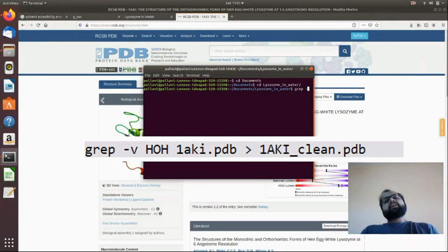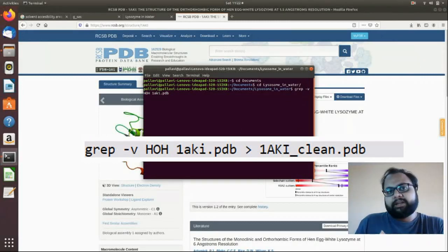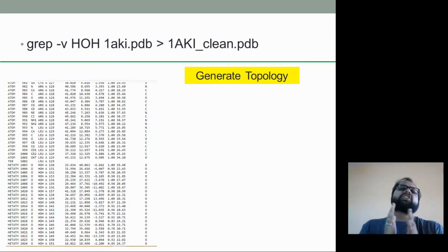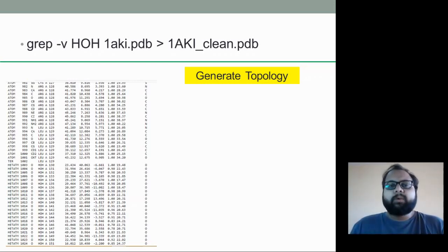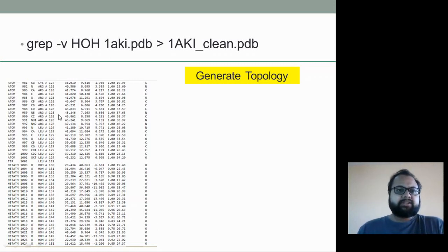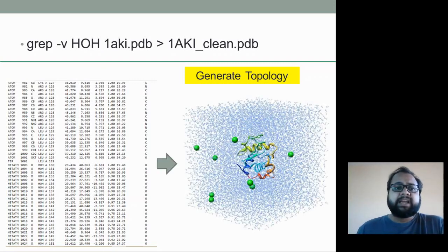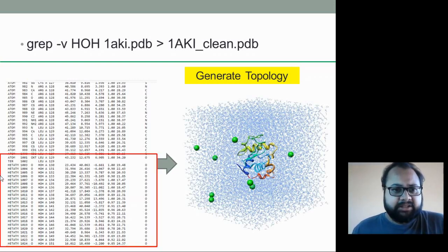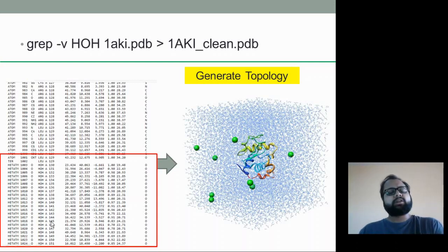Our first command is for generating the topology of the proteins. The command is 'grep -v HOH 1aki.pdb'. This is where we are cleaning our PDB protein. The 1aki.pdb is the PDB protein we downloaded from RCSB PDB. If you open it in Notepad, you can see the atoms of the amino acids for our lysozyme, and below are the water molecules — the hetero atoms and HOH molecules.